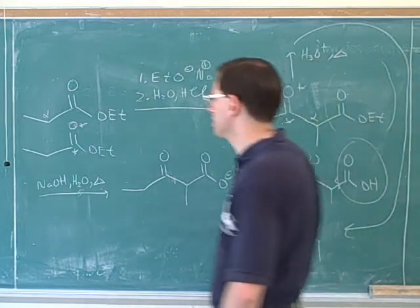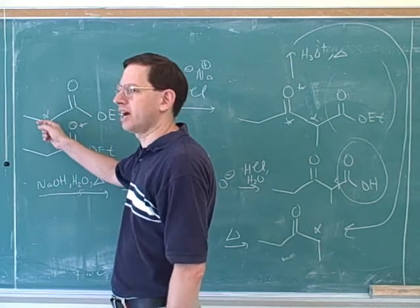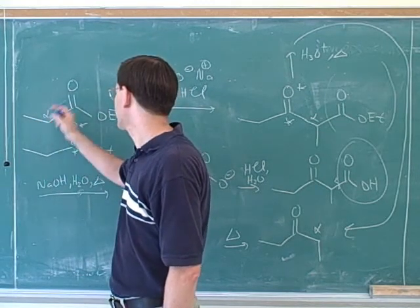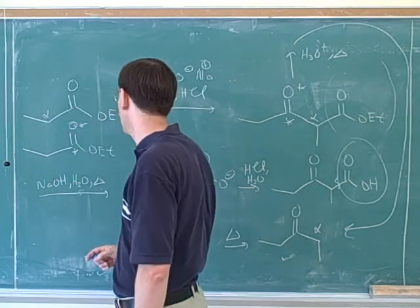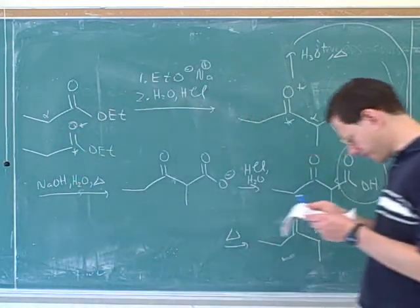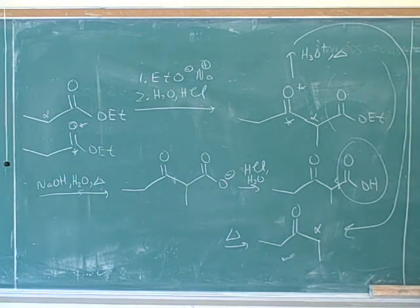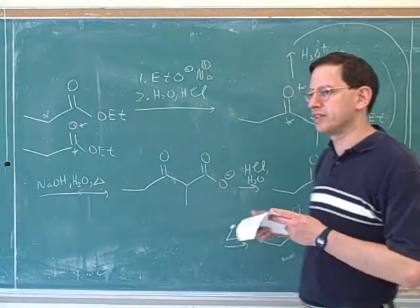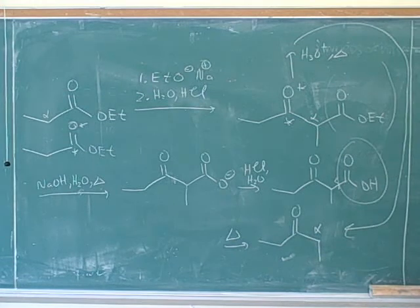So basically what we've done here is we've added this group to the alpha carbon and then we cleaved this off. We added this group to the alpha carbon and then we cleaved this off. And when the alpha carbon attacks this, it turns into a keto. It's pretty complicated. This reaction here by the way is called saponification. This base-catalyzed hydrolysis is saponification.